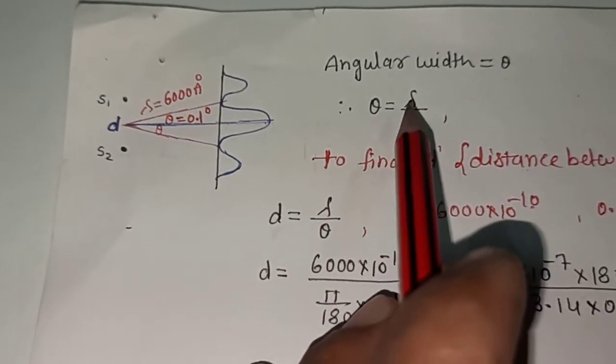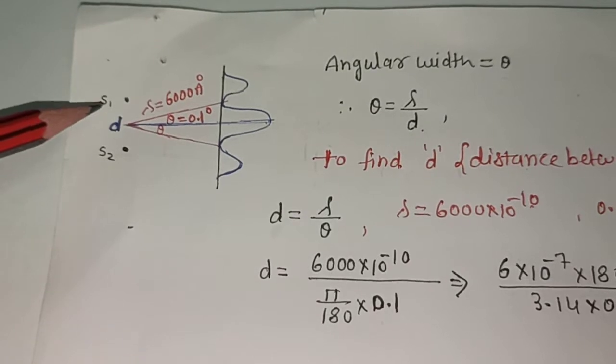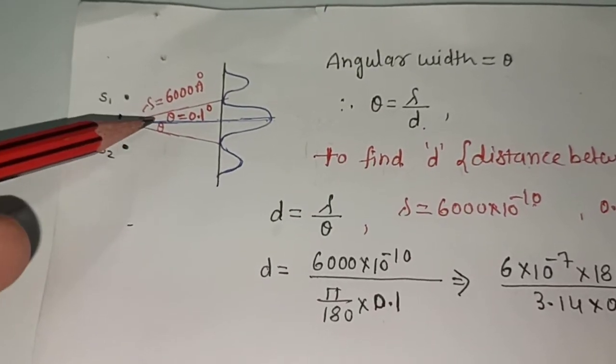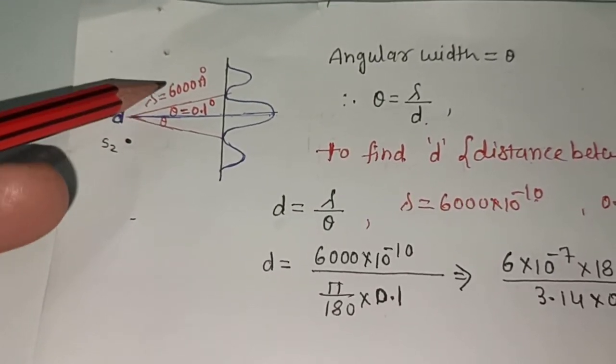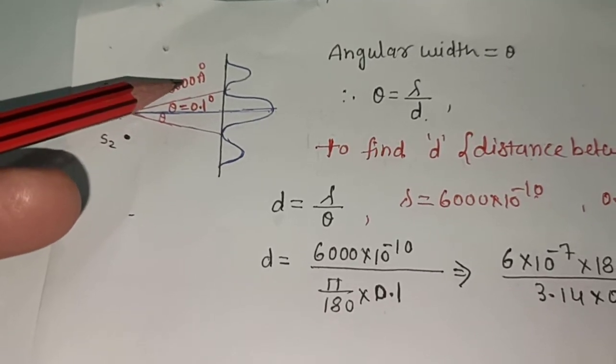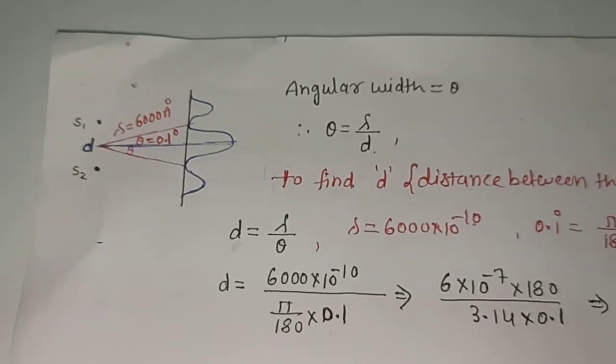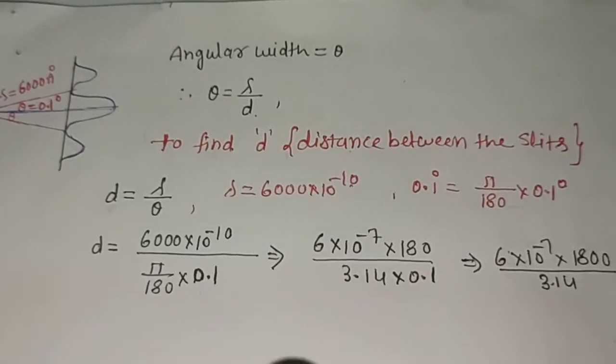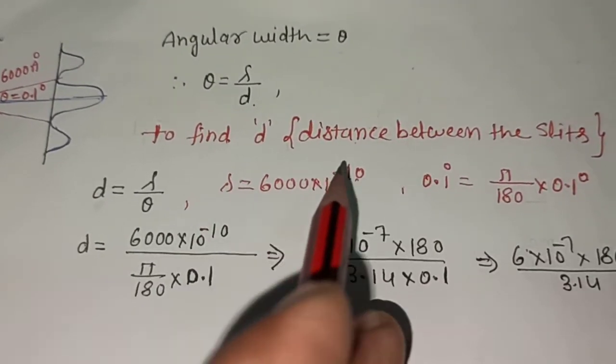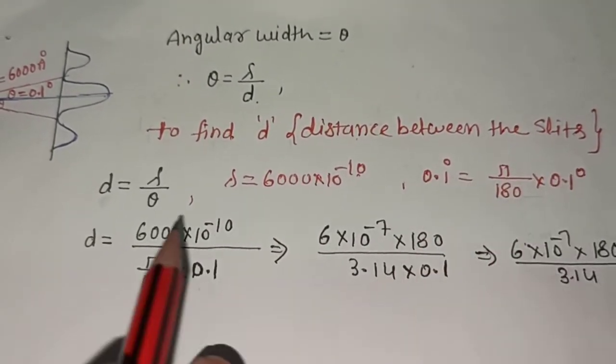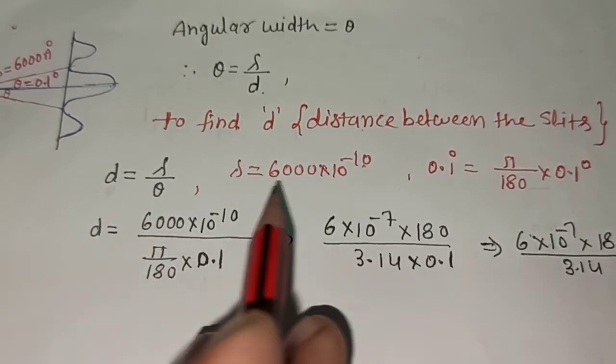d is this one. So we have to calculate the distance d. Already wavelength is given, so we need to find the value of small d, the distance between the slits. And this is the formula, same as it is.